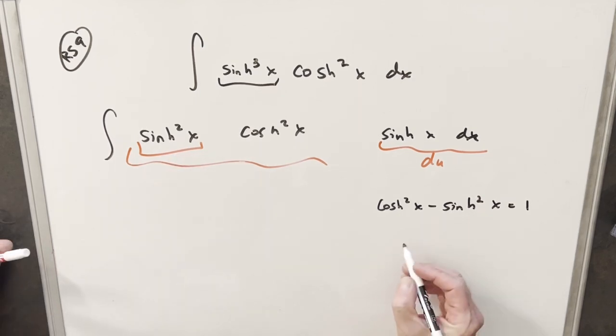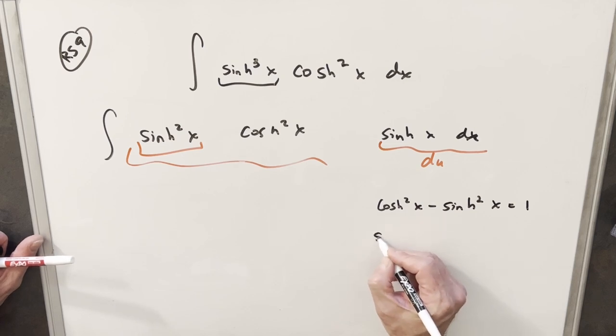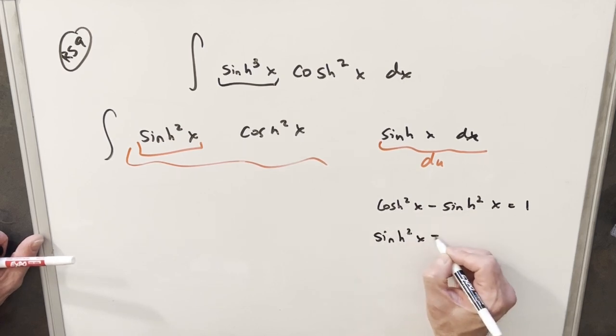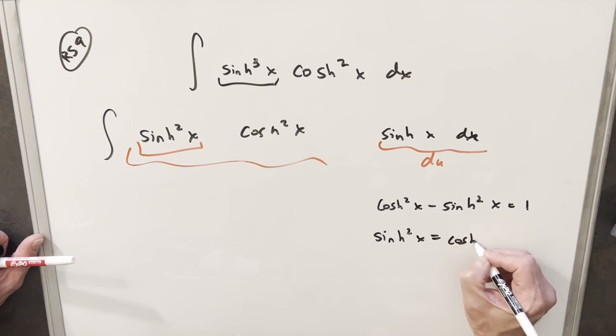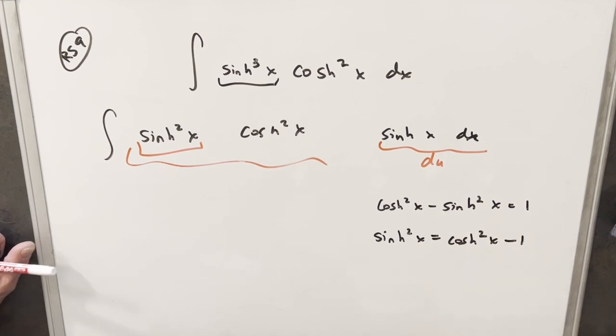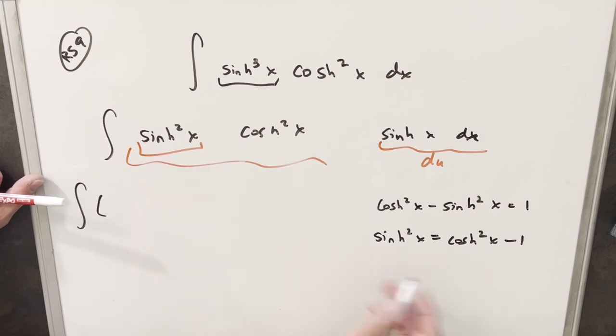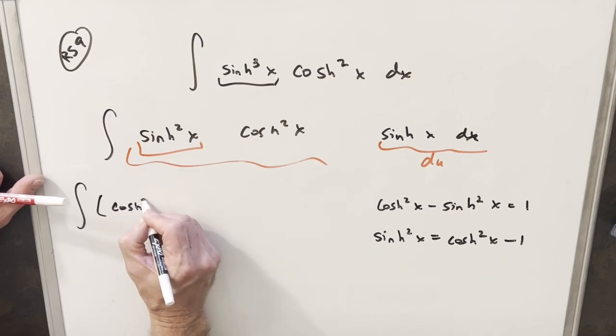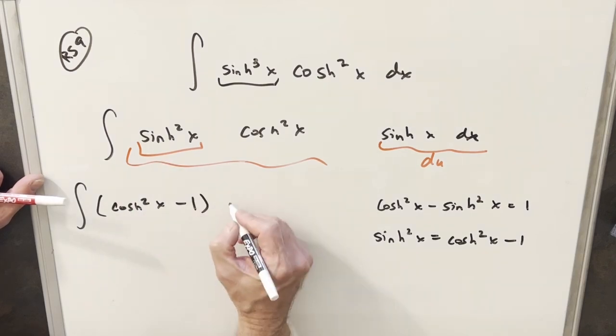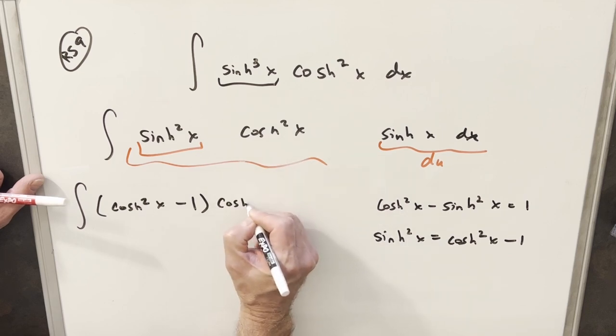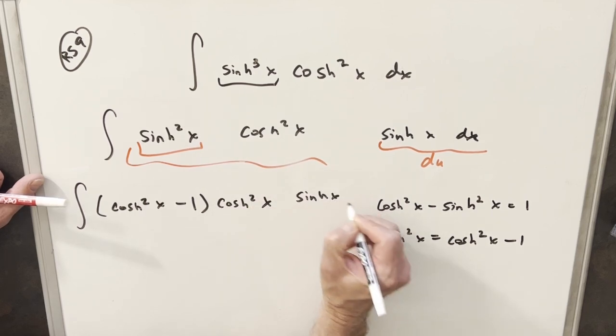Well, it's pretty easy to solve that. If I just rearrange this, if we solve for sinh squared x, we're going to end up with cosh squared x minus one. So now I'll rewrite this integral, but for sinh squared x, I'm going to plug in cosh squared x minus one. We'll still have this cosh squared x, and then we'll have our sinh.